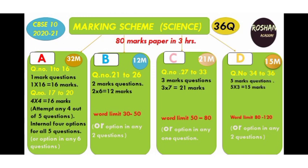Questions 17 to 20 also belong to Section A but they are questions which have internal options — that is, attempt any four out of the five questions you are having internally between questions 17 to 20. In questions 1 to 20 you will see options given for any of the six questions. So Section A is carrying 32 marks in all.